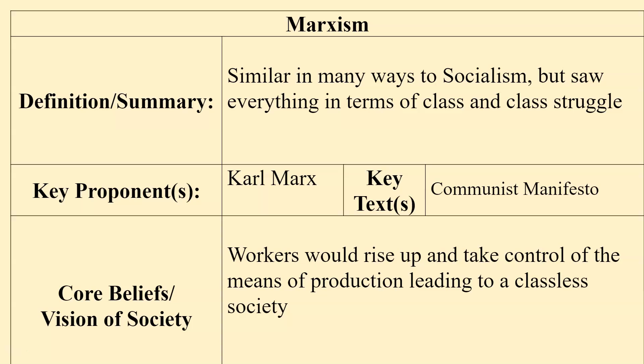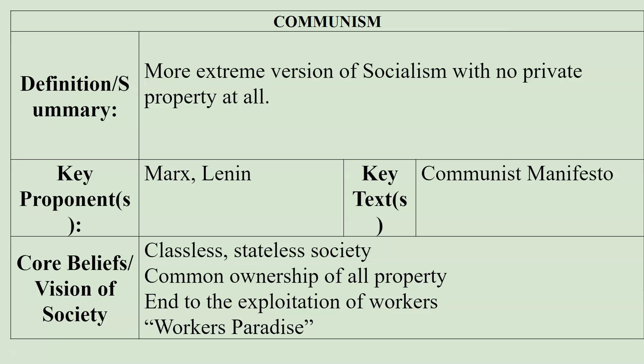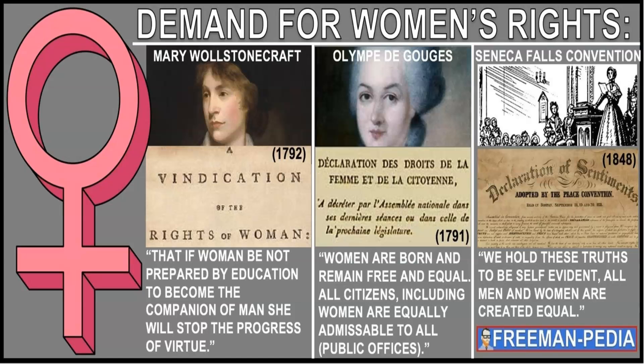A more extreme view of socialism is Marxism. Marx saw everything in terms of class struggle; his theory was that workers would rise up and take control of the means of production, leading to a classless society — the so-called workers' paradise. This grew into the idea of communism, attempted in the Soviet Union as part of the Russian Revolution. Its proponents were Marx and Lenin; it was supposed to create a classless, stateless society with common ownership of property to end the exploitation of workers. It never truly came to fruition anywhere, as it is really a utopian vision.